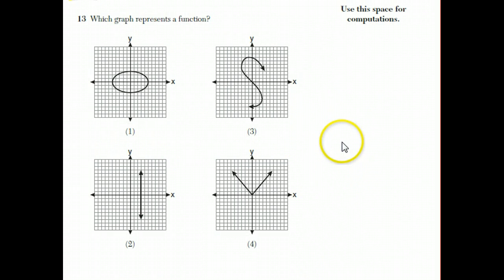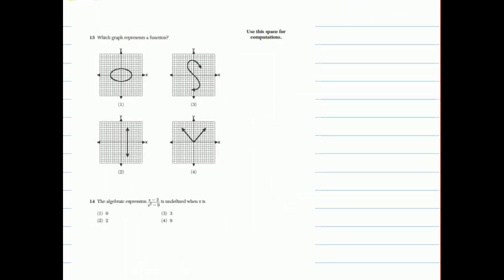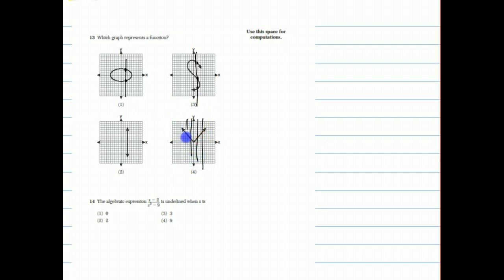Question 13 asks which of the four graphs represents a function. For this exam, the key idea is the vertical line test: a graph is not a function if you can draw a vertical line that crosses more than one point. The ellipse fails — a vertical line hits two points. The S-shape fails — a vertical line can hit three points. The V-shape passes — no matter where you draw a vertical line, it only hits one point, so it is a function.